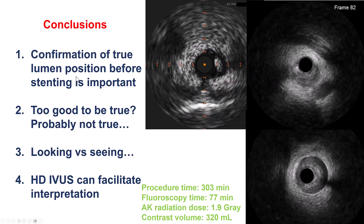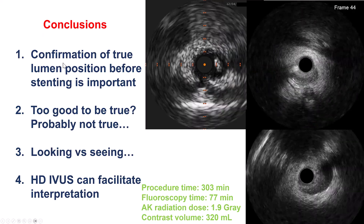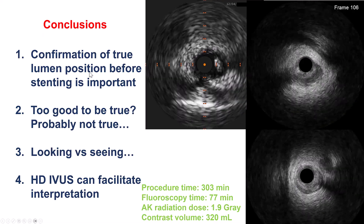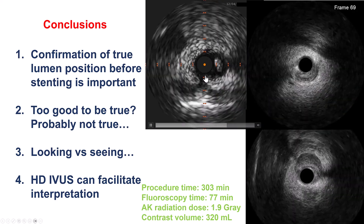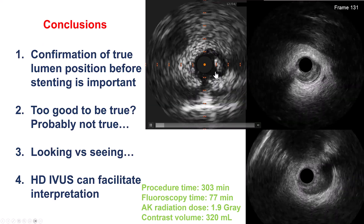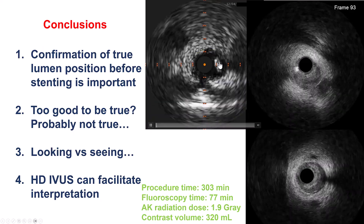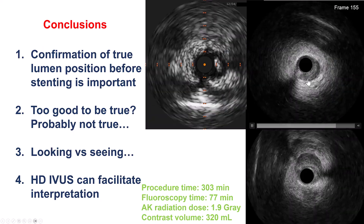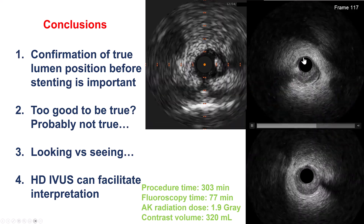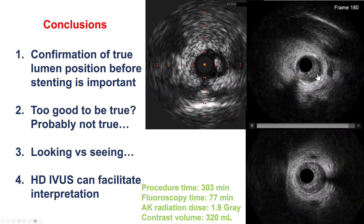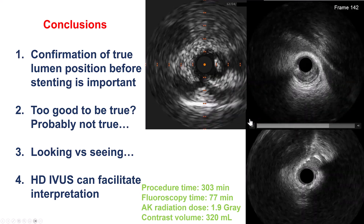Several lessons from this case. The first is evident for every CTO case: before placing stents, one needs to confirm that the guide wire is in the distal true lumen. One way to confirm is by using intravascular ultrasound. In this case, we thought the IVUS showed something on the wall, but it did not. This is apparent after we did the HD IVUS — 20 MHz versus 60 MHz — where we can now see much more clearly that we were in the false lumen, with the true lumen compressed on the bottom of the vessel.